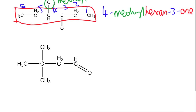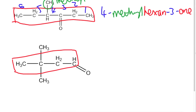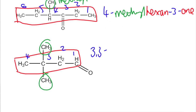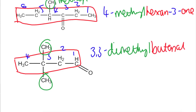Looking at the second example, we've got an aldehyde because the carbonyl is on the end carbon. We have four carbons, and we do need to number the chain because we have some branches. For an aldehyde, carbon number one will always be the one with the carbonyl attached. We have two methyl branches here attached to carbon number three, so we're going to have dimethyl. The name is 3,3-dimethylbutanal.